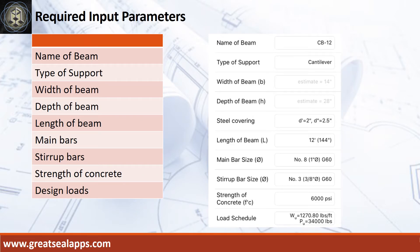Input parameters required: name of beam is CB12, type of support is cantilever, width of beam is 14 inches, depth of beam is 28 inches, and length of beam is 12 feet.